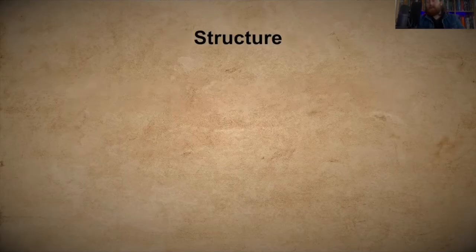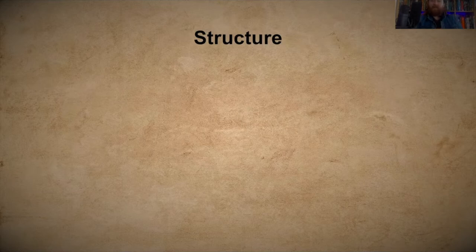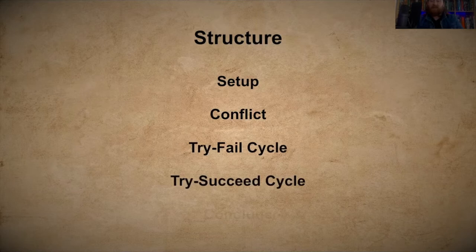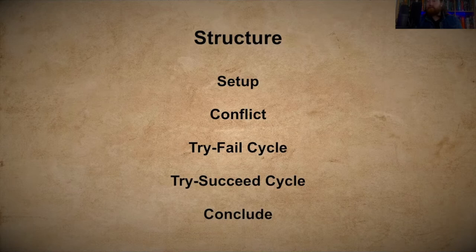So we have a prompt set, we know what we've got to include in the story, and we know it's an investigation story. Here's how I structure it: setup, conflict, try-fail cycle, try-succeed cycle, and then conclude. In a moment I'll tell you how to proportion these to make a 250-word, give or take 10%, story. If you wanted to write a 500-word story you just double it — it's a guide, not a strict rule.